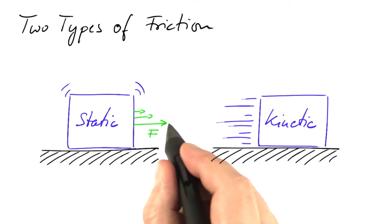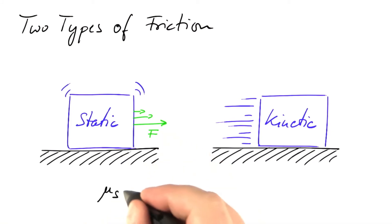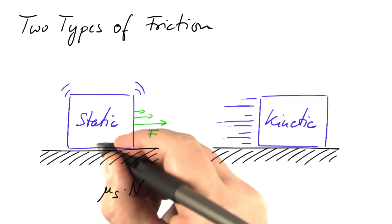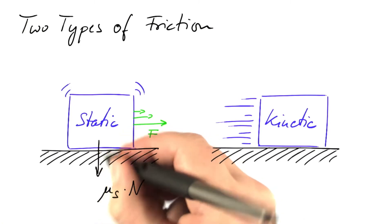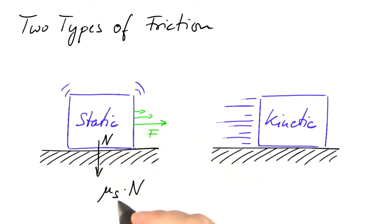Experiments show that this threshold of force is a constant times the weight force, which often is called N because it's a normal force, it's perpendicular to the surface. This coefficient is called the coefficient of static friction, μs.